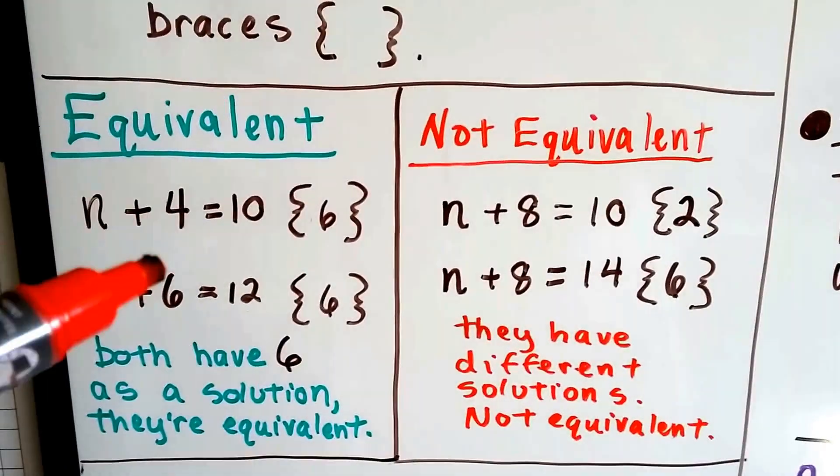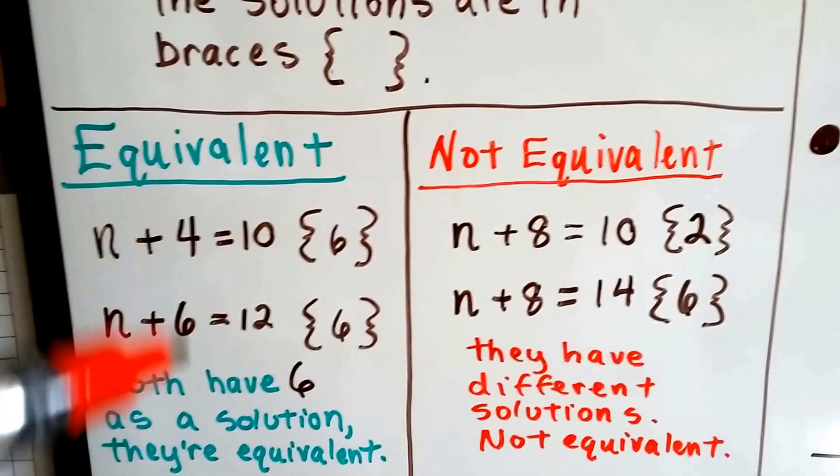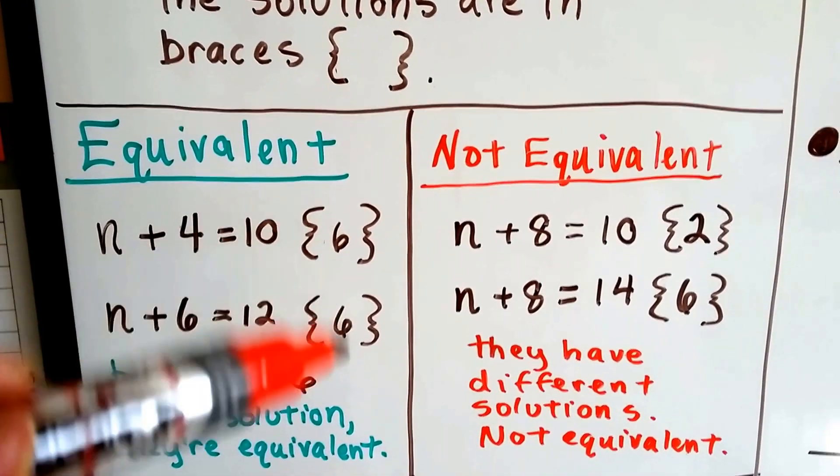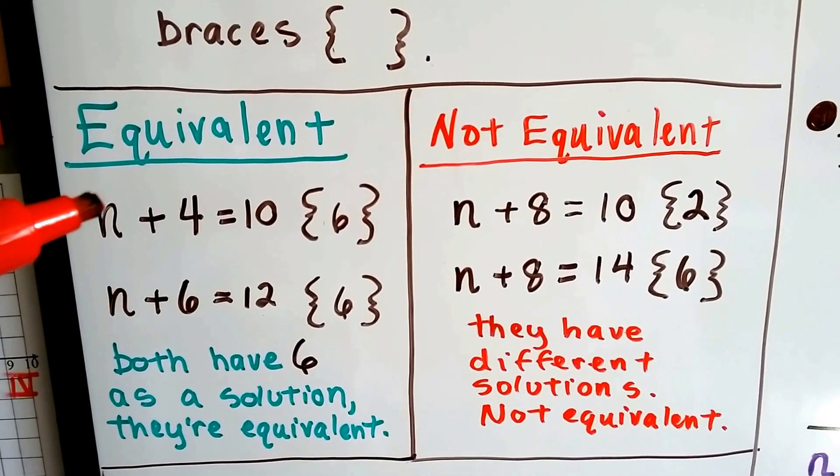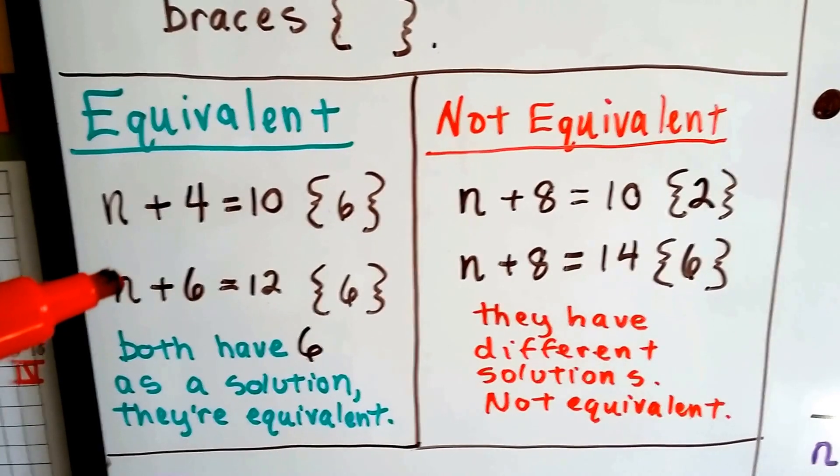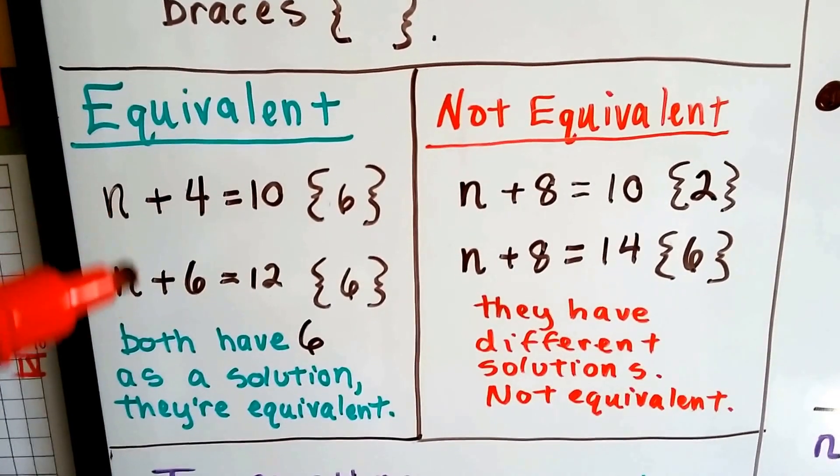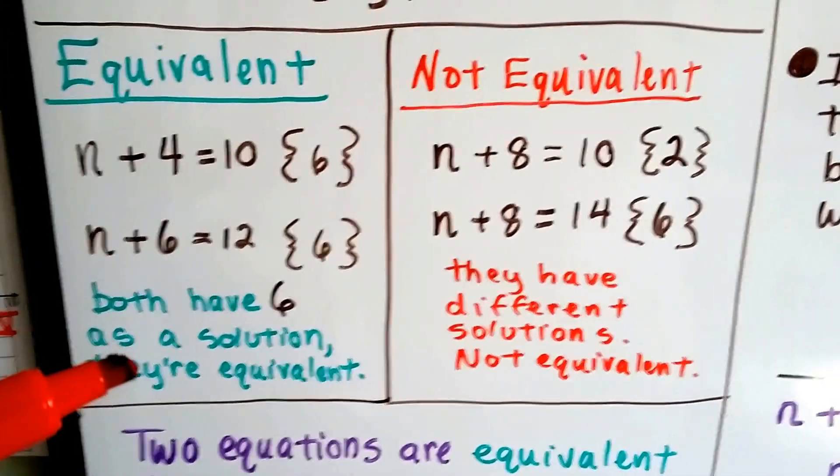Take a look at these. These are equivalent and these are not equivalent. These are equivalent to each other because they have the same solution of 6. n plus 4 equals 10, well 6 plus 4 equals 10. n plus 6 equals 12, 6 plus 6 equals 12. So n stands for 6 in both of them. That makes them equivalent.